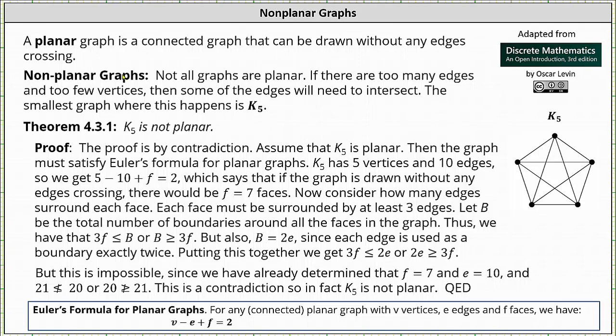In the previous lesson we learned a planar graph is a connected graph that can be drawn without any edges crossing. And for any connected planar graph with v vertices, e edges and f faces, the formula v minus e plus f equals 2 is always true, and this is called Euler's formula for planar graphs.